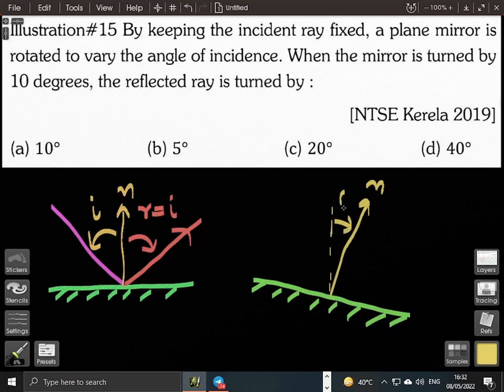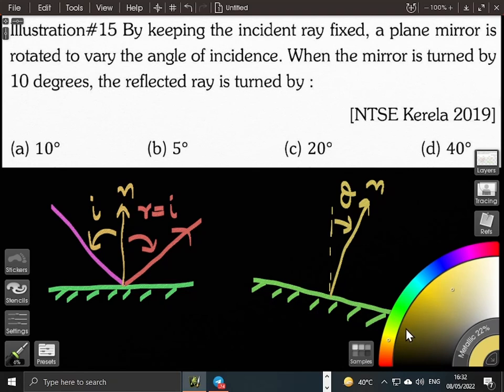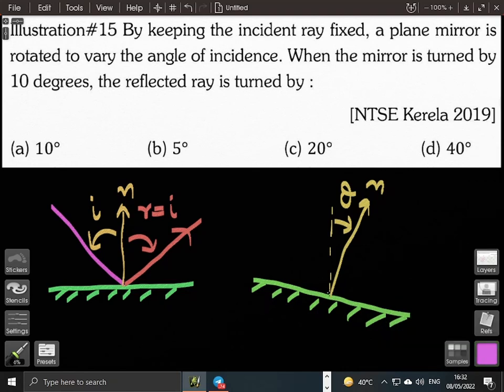The incident ray is fixed at the same angle. The incident ray is still coming at an angle of incidence i with respect to the old normal. You can clearly see the angle of incidence is now i plus theta.